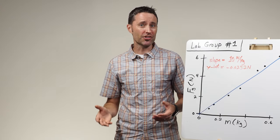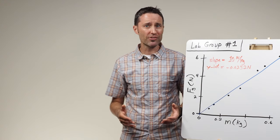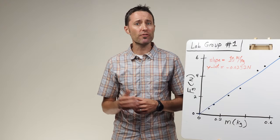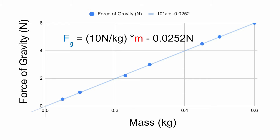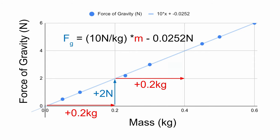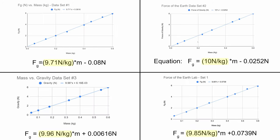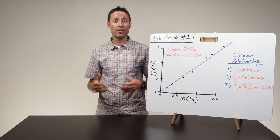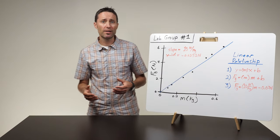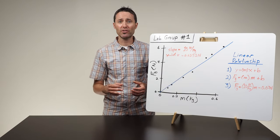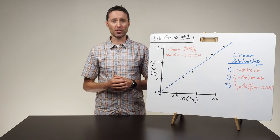After the students identify the shape of all the graphs as linear, ask them what this indicates about the relationship between the force of gravity on an object and its mass. The students should identify that the linear shape suggests that the force of gravity will increase in size by the same amount when the mass is increased in equal increments. When looking at the slope values, it should be clear that the force of gravity seems to increase by approximately 10 newtons for each one kilogram of mass — meaning there is approximately 10 newtons of gravitational pull on every one kilogram of an object's mass.